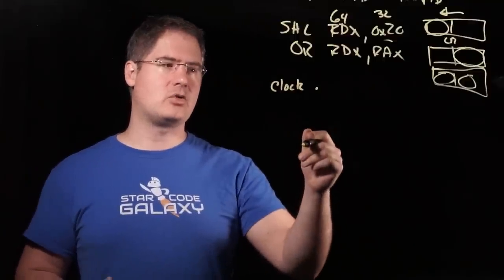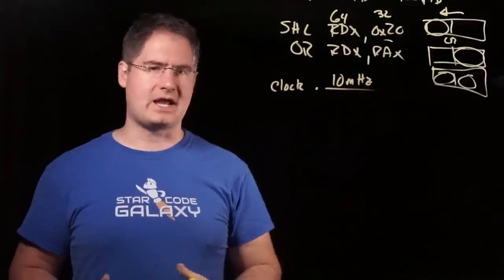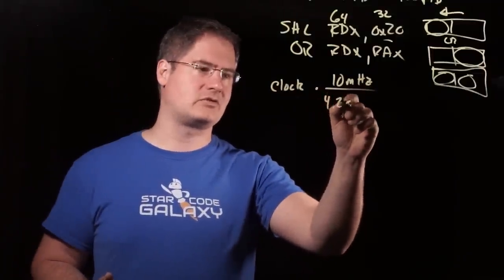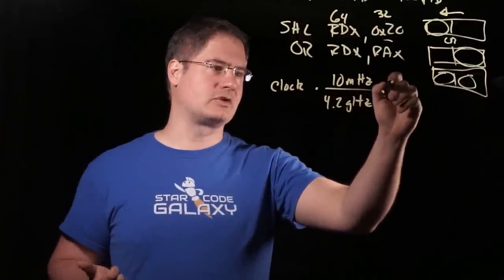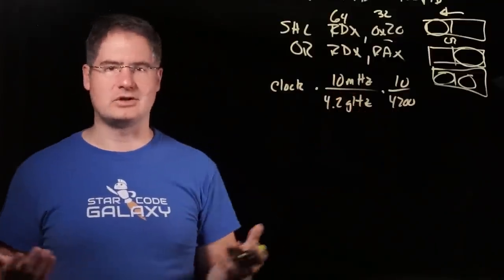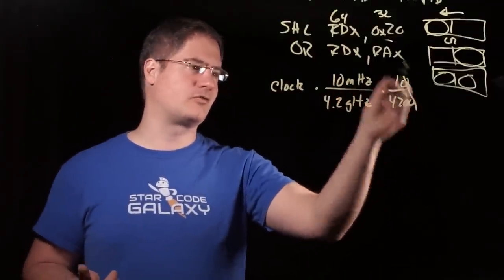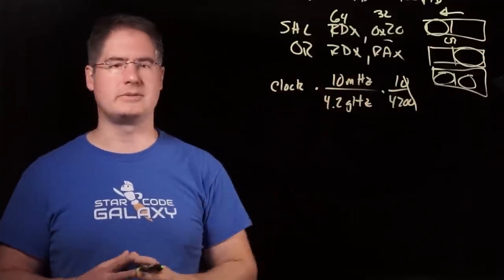We're basically saying, all right, we want a 10 megahertz clock, and let's go ahead and divide that by what we're actually getting, which is a 4.2 gigahertz clock, yeah? Which is just equivalent to 10 over 4200, right? That's really all we're doing here. One over 420 might be the way to say it. Elon Musk would be proud.